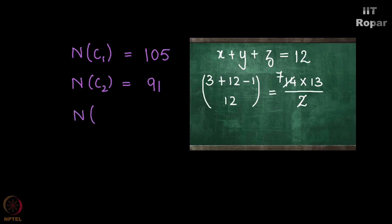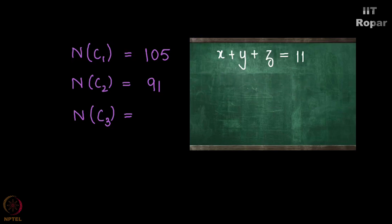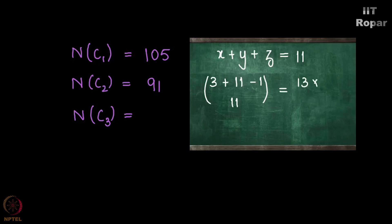n of C3 will be those solutions where z is greater than or equal to 9. Removing 9 on both sides I get the equation x plus y plus z equals 11. And 3 plus 11 minus 1 choose 11, which is 13 choose 11, which is 13 into 12 by 2, which is 78.